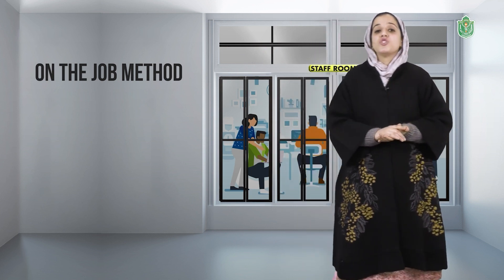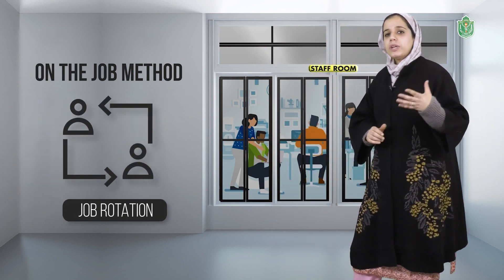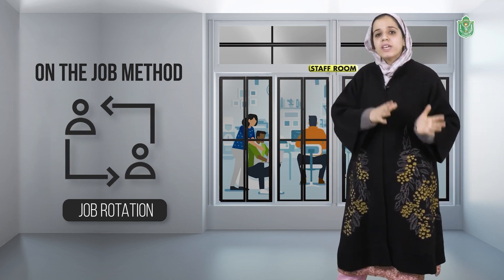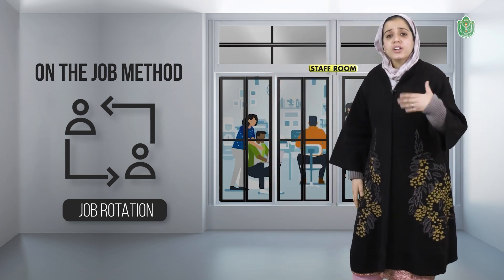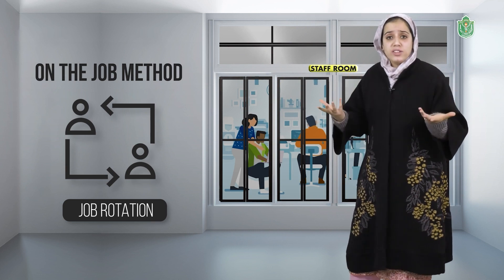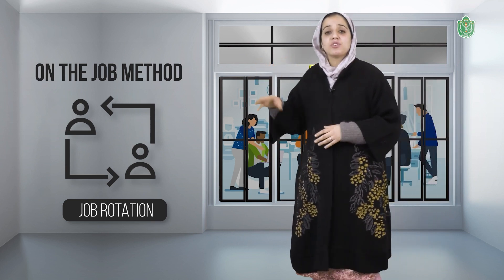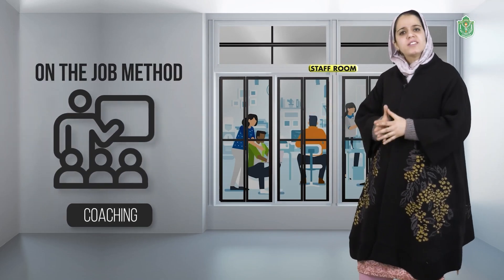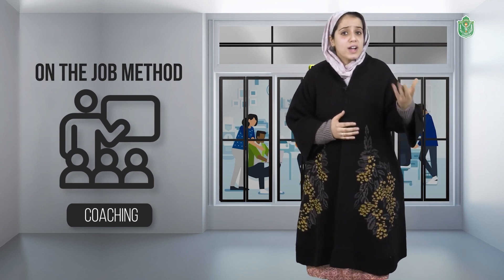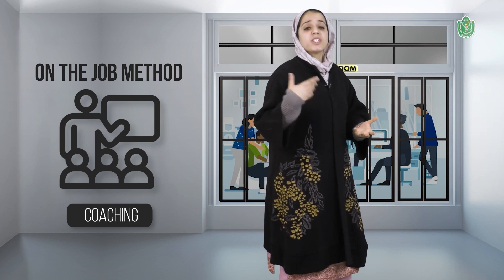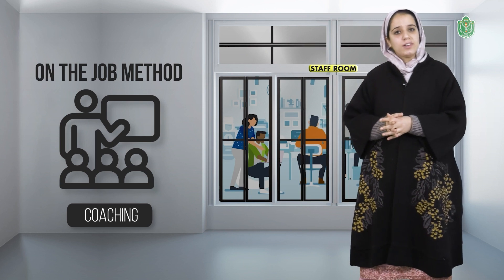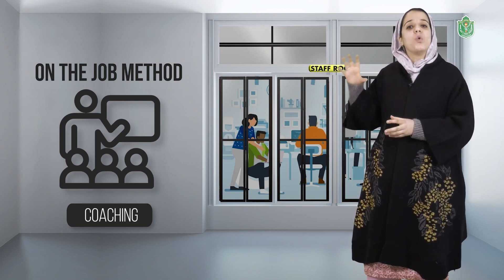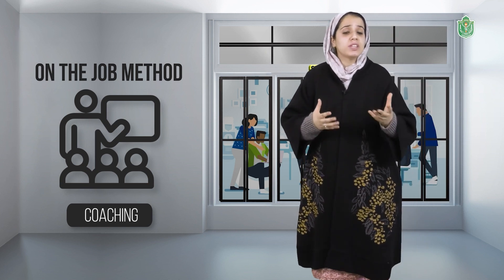Next is job rotation. Under this training method, the employee is rotated from one job to another in order to acquire more knowledge and a general background of all the jobs. The next is coaching. Under coaching, the superior instructs and guides the subordinate as a coach. The coach and the trainee mutually set goals and suggest ways of achieving these goals.